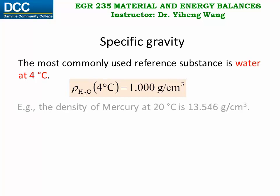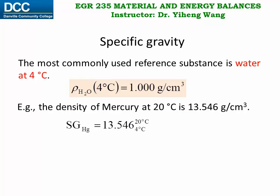For example, if we know that the density of mercury at 20 degrees C is 13.546 g per cubic centimeter, then its specific gravity — which equals the ratio of the density of mercury and the density of water, which is one — is easily calculated as 13.546, with no dimension and no unit. But sometimes we include a note to indicate that this is the specific gravity at 20 degrees C with the reference of water at 4 degrees C.